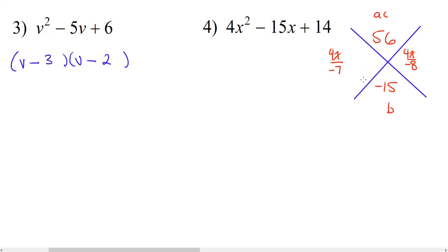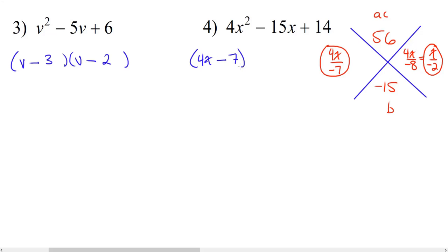We want to simplify these fractions. Here we have 4x over negative 7 — we can't simplify this, so it stays as is. Over here we have 4x over negative 8, and we can divide both by 4. So 4x divided by 4 is x, and negative 8 divided by 4 is negative 2. These two fractions become our two binomials: 4x over negative 7 becomes 4x minus 7, and x over negative 2 becomes x minus 2. So this is our answer.